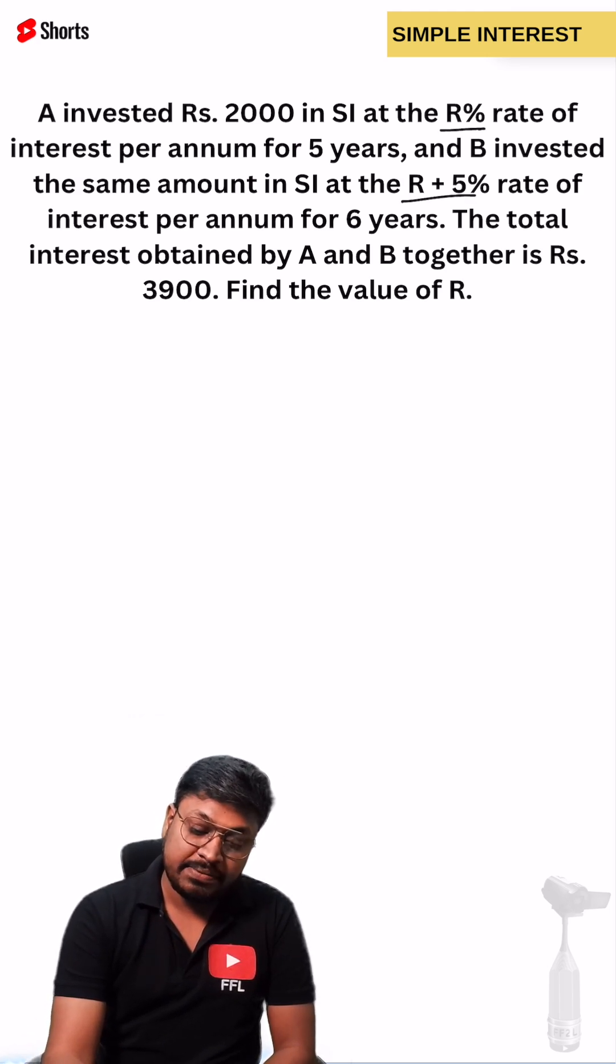A's rate is R percentage for 5 years. B's rate is R plus 5 percentage for 6 years.